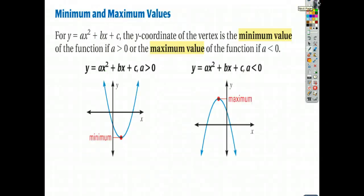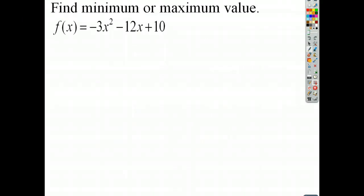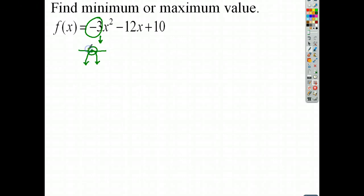Now let's talk about minimum and maximum values. Whenever a is greater than 0 — the parabola points up — the vertex is the minimum value, the lowest point. Conversely, if a is negative — the parabola points down — the vertex is the maximum value. Keep those in mind; they'll especially help with word problems later in the chapter. For this next function, we can quickly determine it's going to be pointing down, so the vertex will be the maximum point.